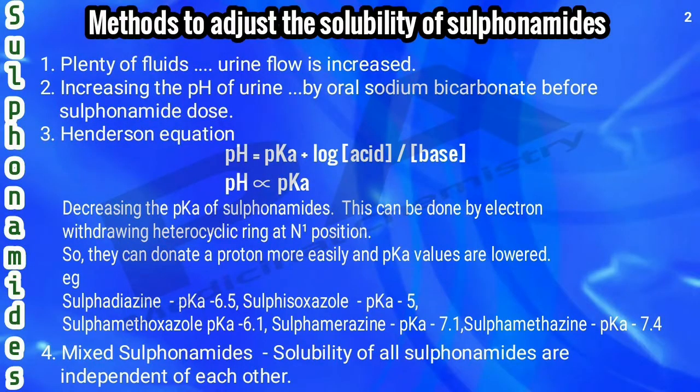Now we will see steps to reduce crystalluria, or methods to adjust the solubility of sulfonamides. The first method is to take plenty of fluid — this increases urine flow. The second method is to increase the pH of urine, since urine pH is 6 while the sulfamido group pH is 10.4. We can increase urine pH by taking oral sodium bicarbonate before the sulfonamide dose.